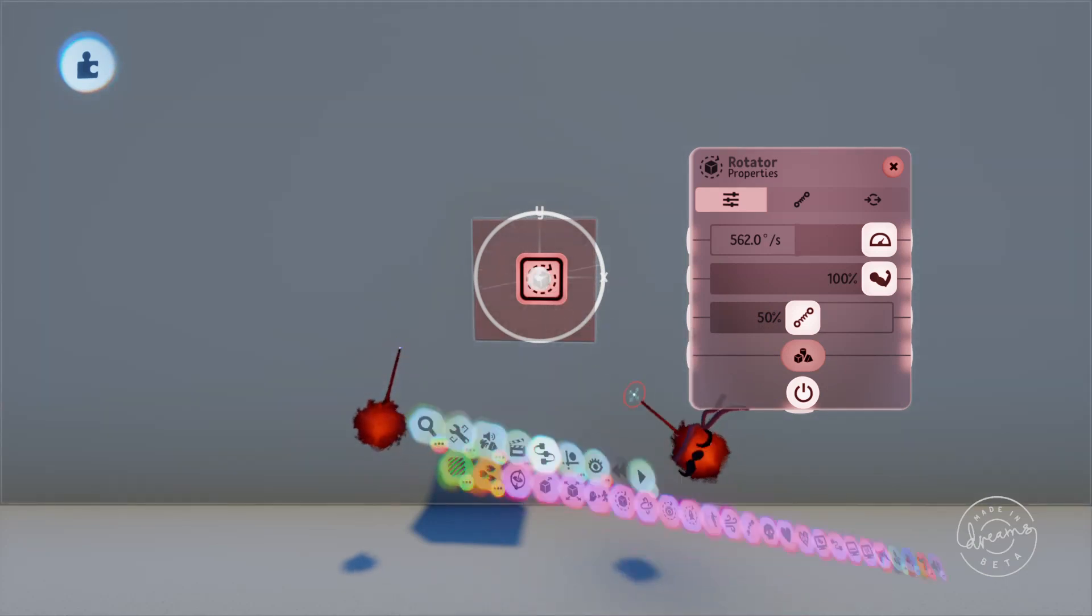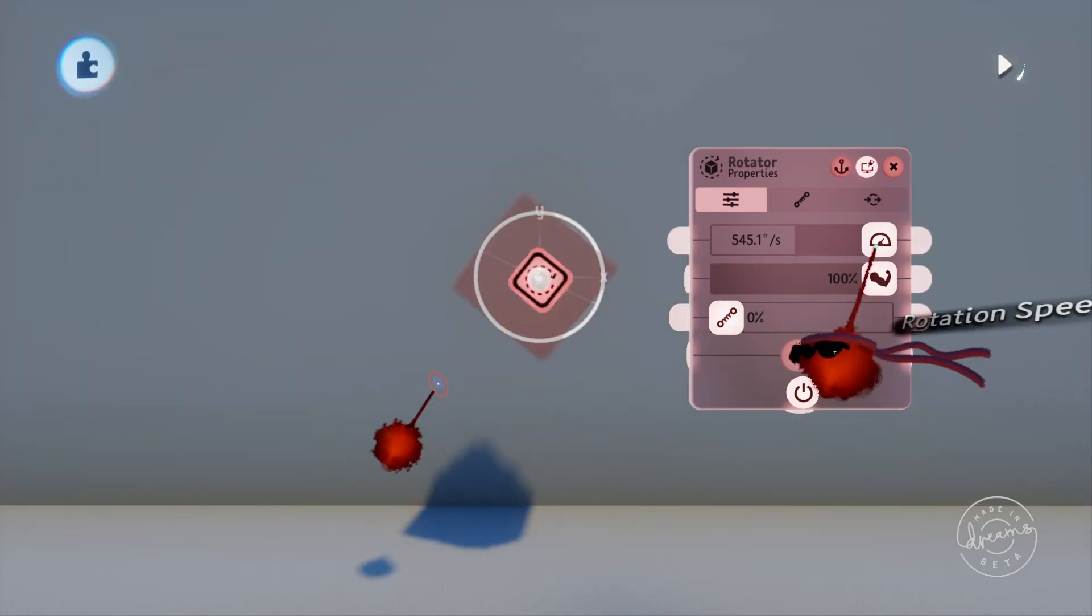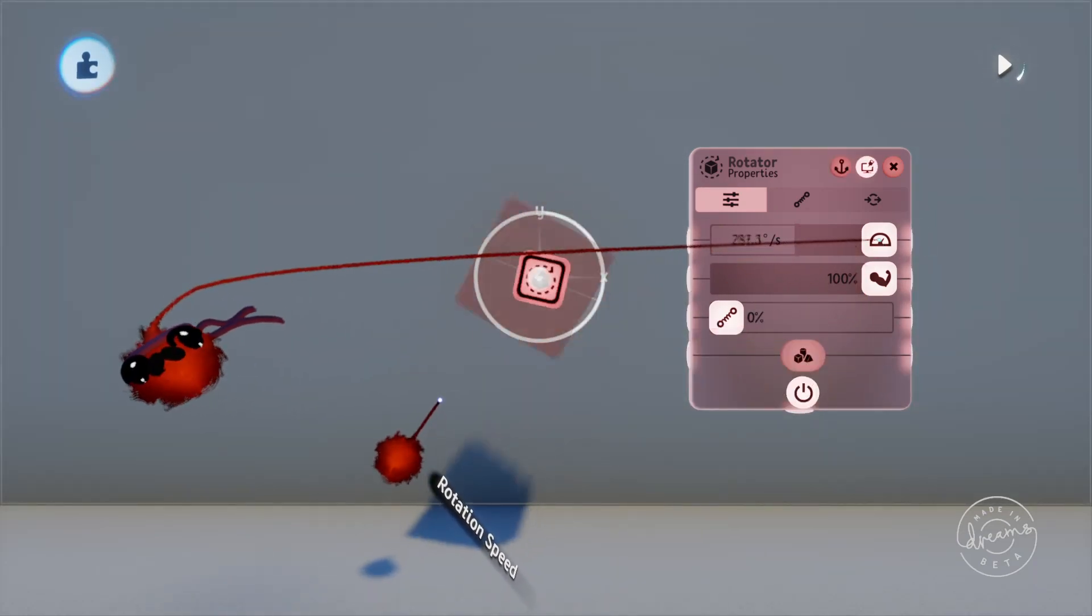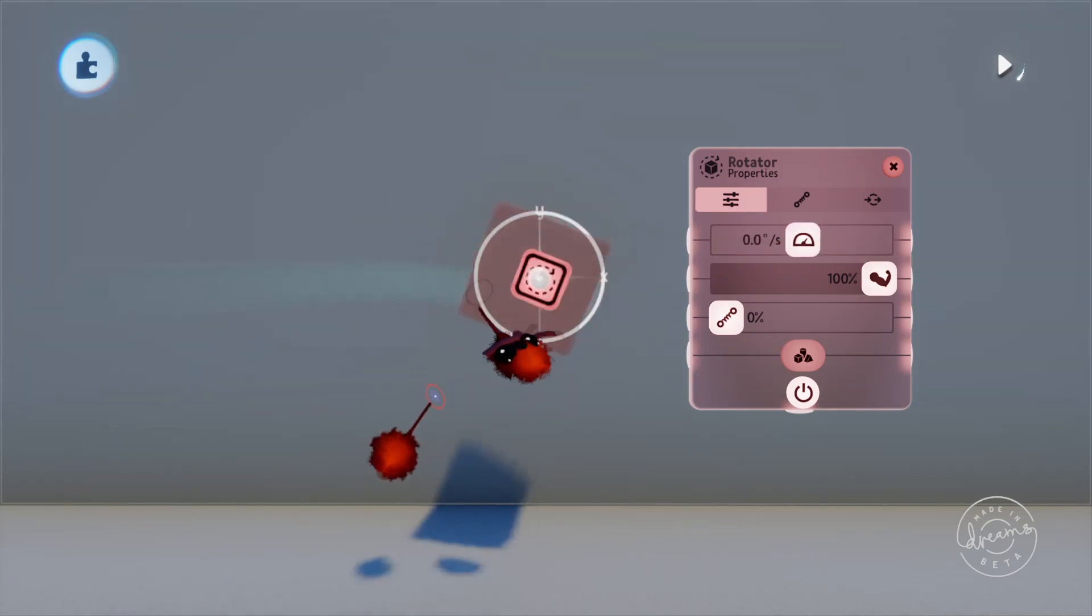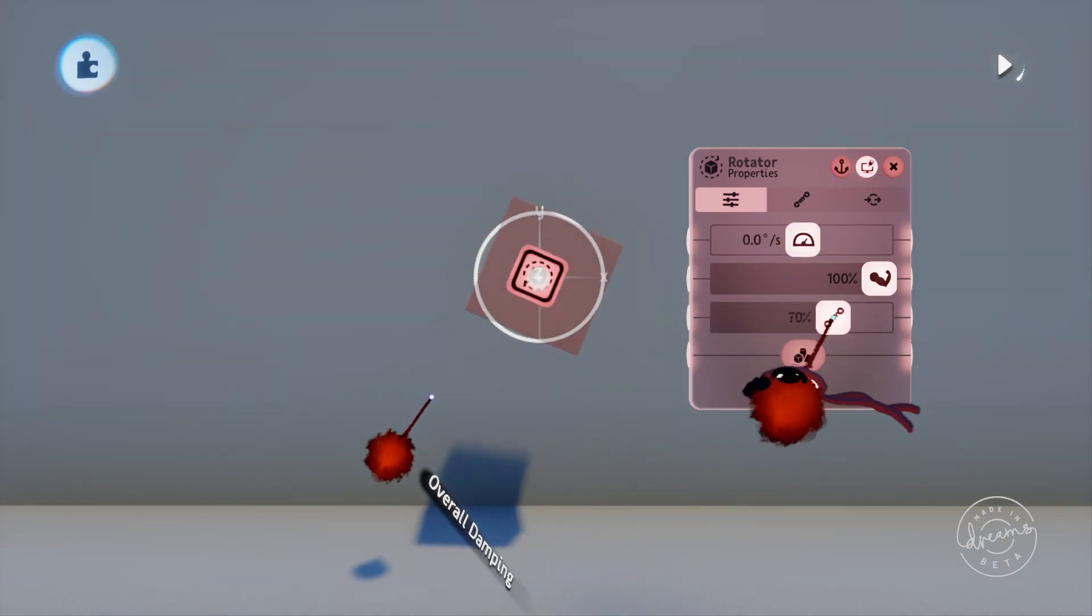Under the strength slider we've got the overall dampening which is the rotator's ability to slow itself down to the speed that you've set. So if we turn this all the way down and set the speed to zero the cube will keep rotating. If we increase the dampening the cube will slow itself to a stop.